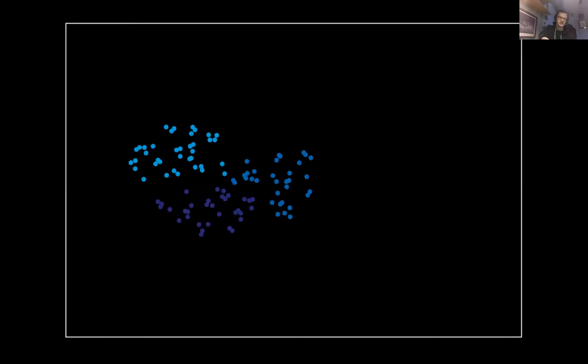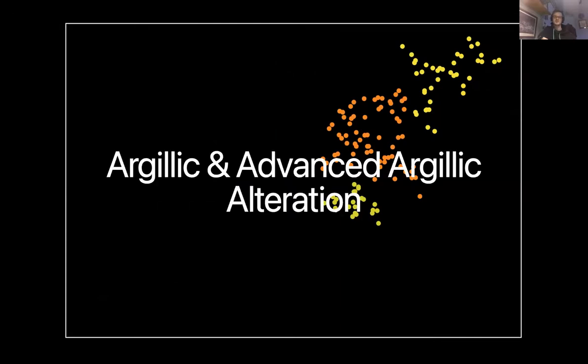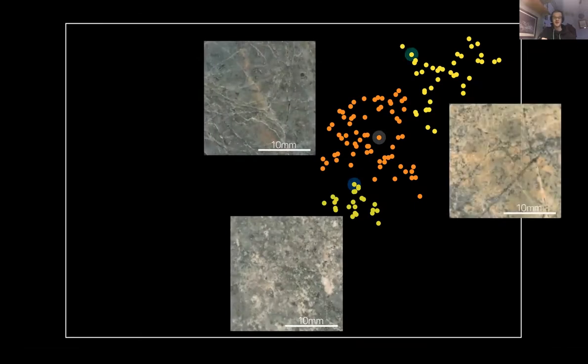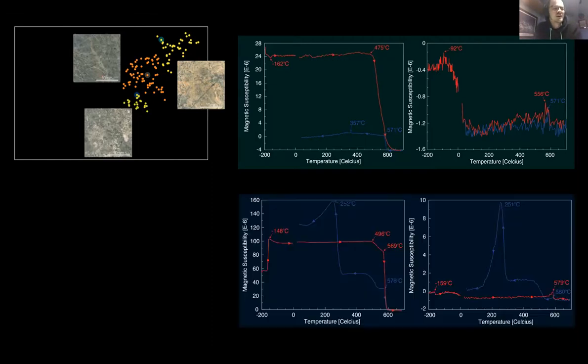Now if we go back to the full graph and isolate the orange group, this is the argillic and advanced argillic alteration. If we look at the TX results here, in this top one you get the complete destruction of magnetite, but then no pyrrhotite forming. But in the bottom one here, you get pyrrhotite forming from the magnetite that was there originally.